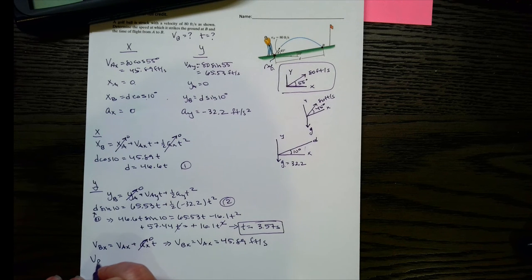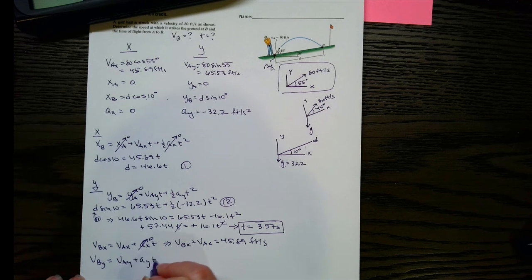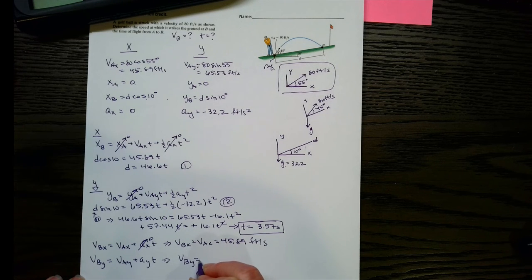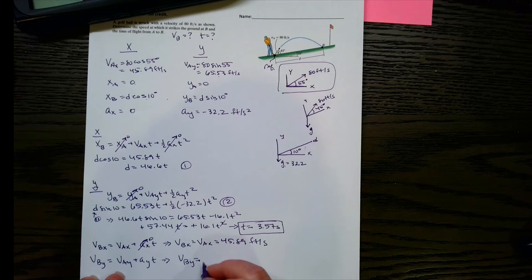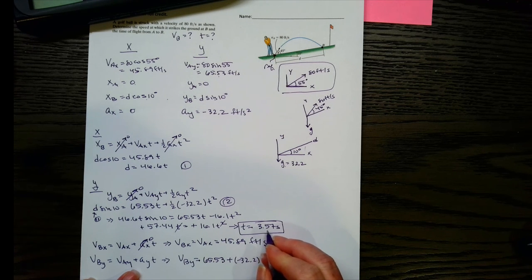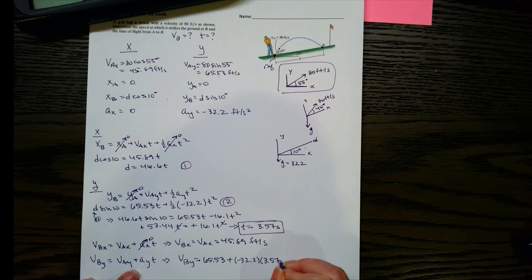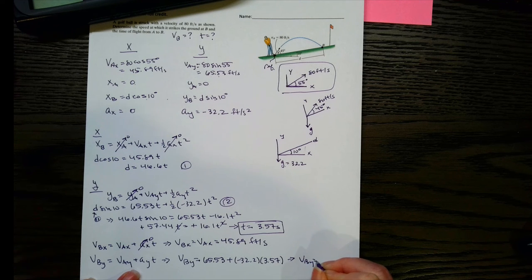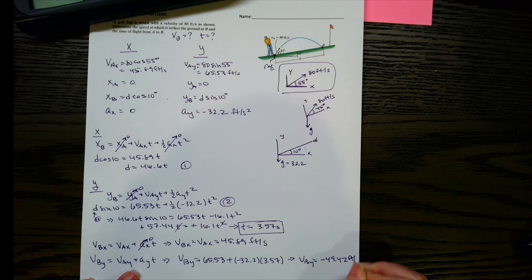Now we need vby. We've got to have both components. So this equation will be vby equals vay plus ayt, and then we just plug in the values for the right side. vay is 65.53 plus ay, negative 32.2, times t, t is the 3.57. So vby then is going to be negative 49.42 feet per second.